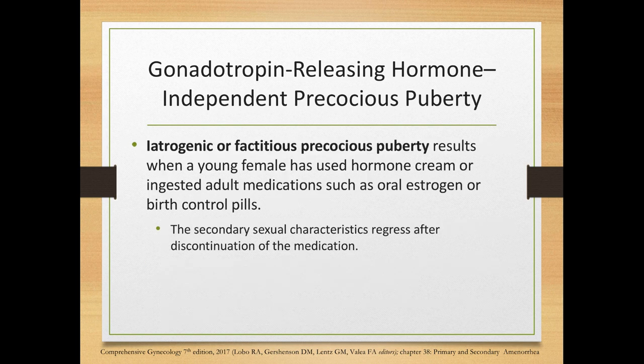Iatrogenic or factitious precocious puberty results when a young female has used hormone cream or ingested adult medications such as oral estrogen or birth control pills. The secondary sexual characteristics regress after discontinuation of the medication.